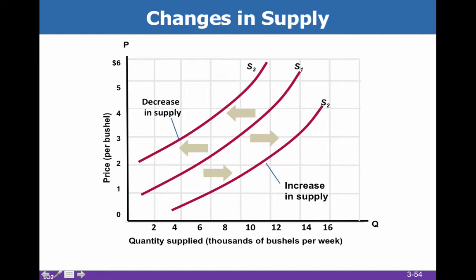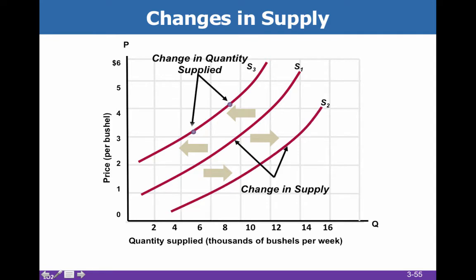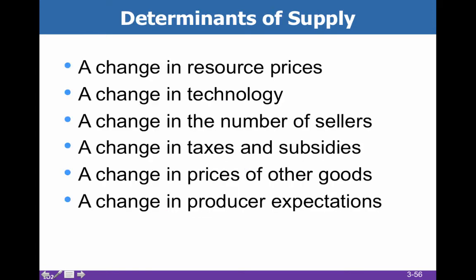Now just like with demand where we had determinants of demand, we also have determinants of supply. If we are moving from one point to another on the same curve, that's a change in quantity supplied. But when we move from S1 to S3, or S1 to S2, that's a change in supply. Now back to the determinants.